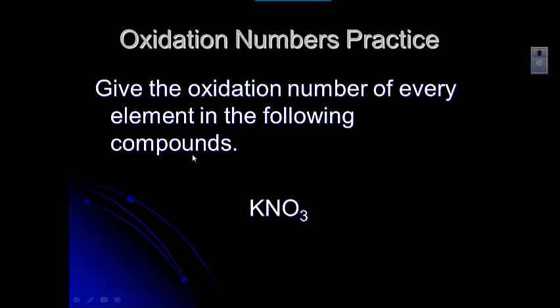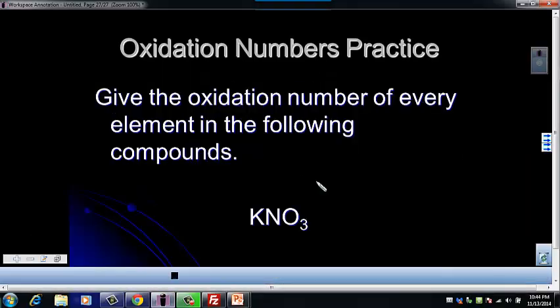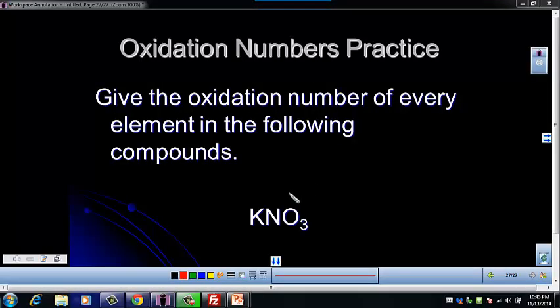Let's think about the ones we know in this compound. This one's a little trickier. We know oxygen is usually a negative two. This is not a peroxide — this is potassium nitrate. But you don't really have anything in your rules about the N.